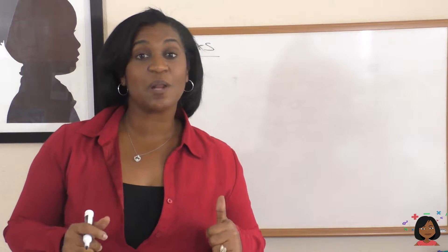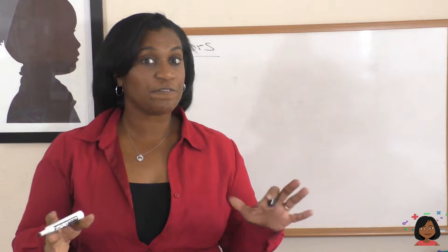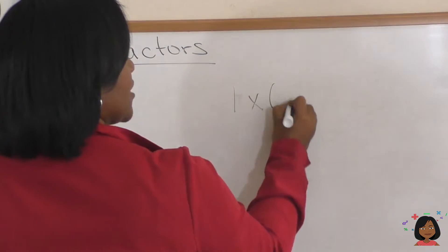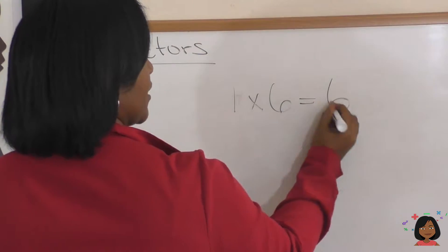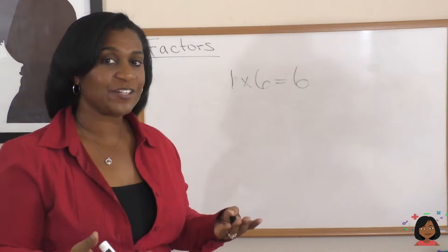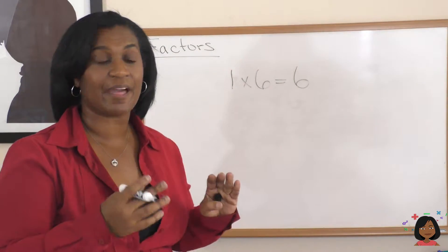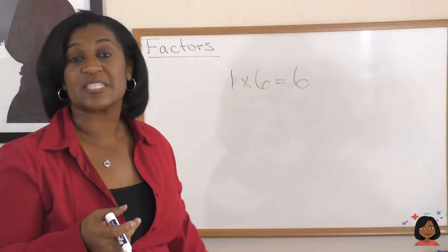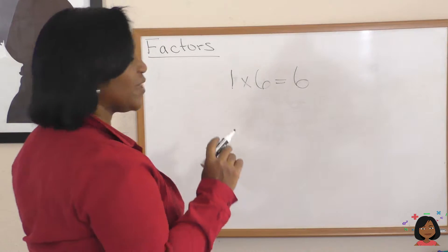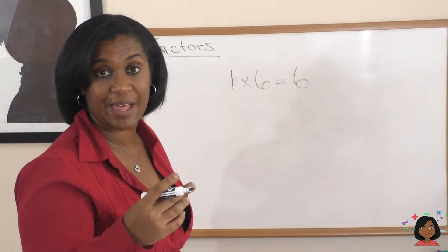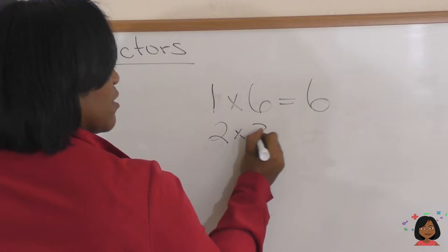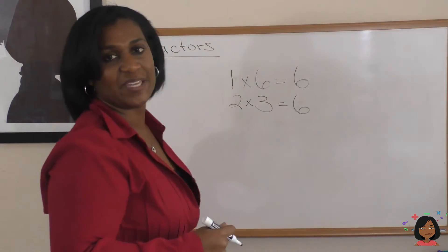Now you might remember from an earlier lesson on multiplication that the word factors came up before. For example, when we said 1 times 6 equals 6, 1 and 6 are factors. They're numbers when multiplied together equal our product, which is the 6. But there are also other factors of the number 6. Think about it. What other two numbers when multiplied together give you 6? How about 2 times 3? Yup, they also equal 6.